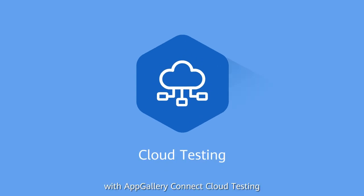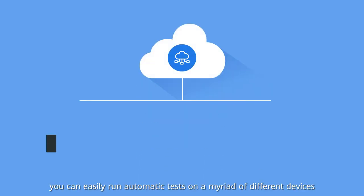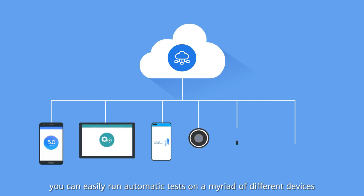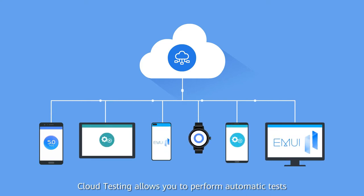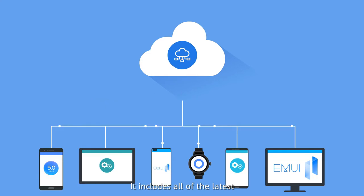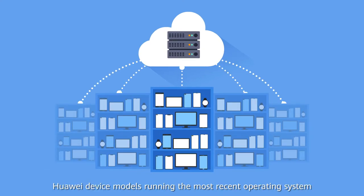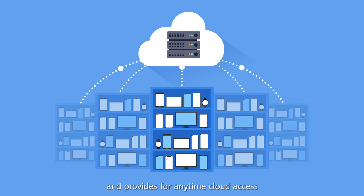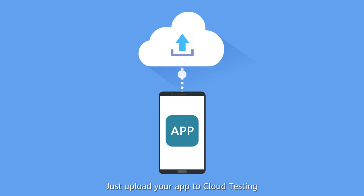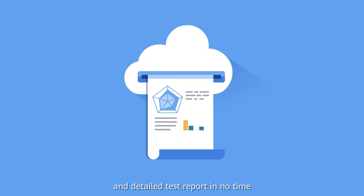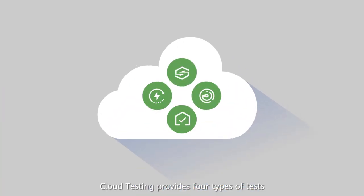With AppGallery Connect Cloud Testing, you can easily run automatic tests on a myriad of different devices. Cloud testing allows you to perform automatic tests on multiple devices at the same time, based on machine learning. It includes all of the latest Huawei device models running the most recent operating system, and provides anytime cloud access. Just upload your app to Cloud Testing, create an automatic test, and you'll get a quick, professional, and detailed test report in no time. Cloud testing provides four types of tests.